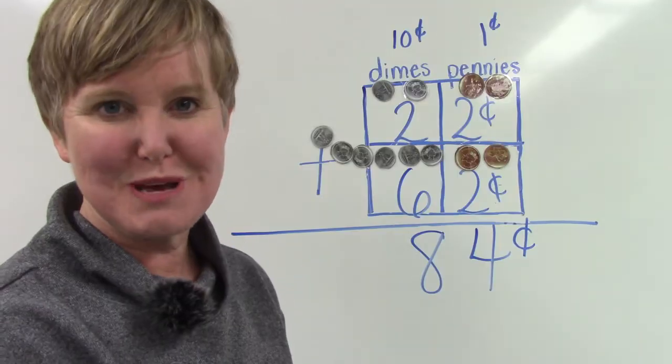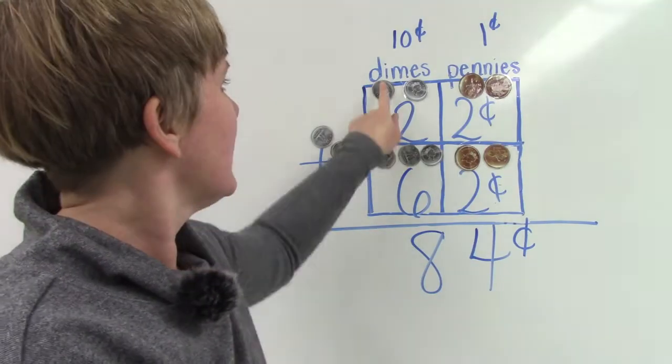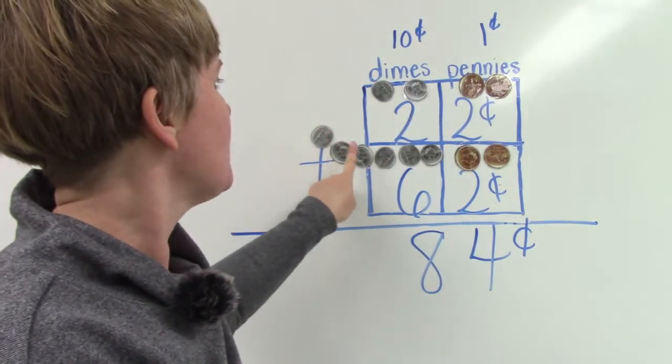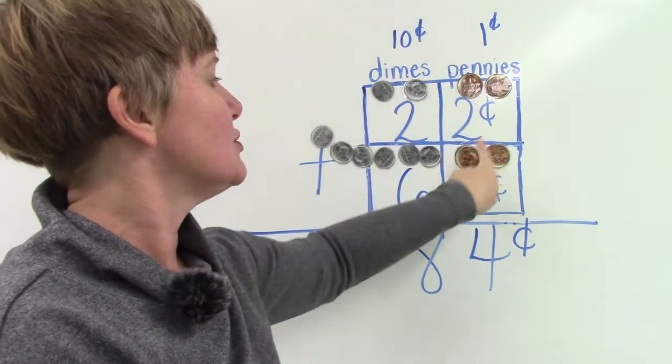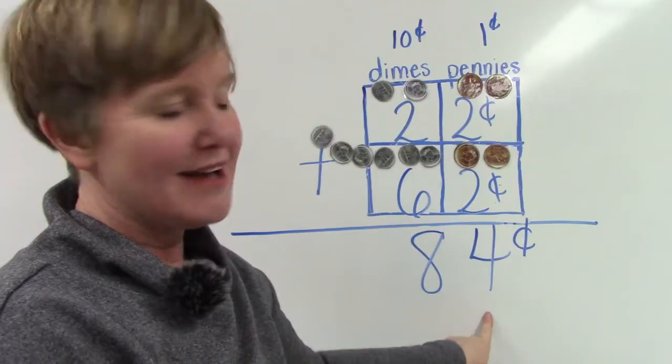Count the money with me just to make sure and check. 10, 20, 30, 40, 50, 60, 70, 80, 81, 82, 83, 84. 84 cents.